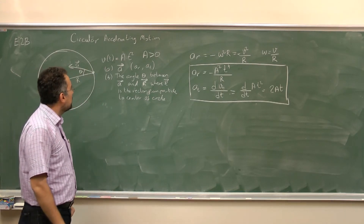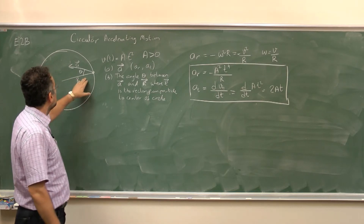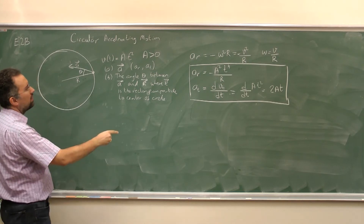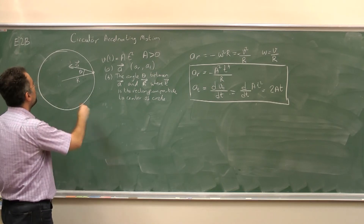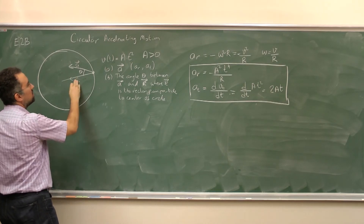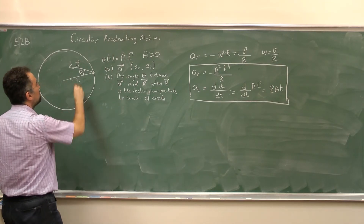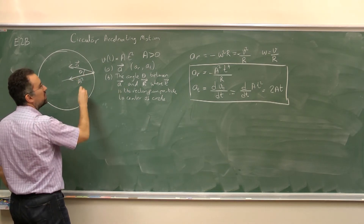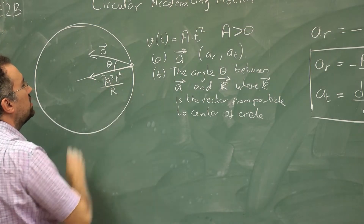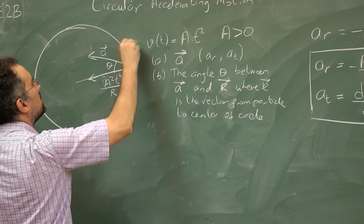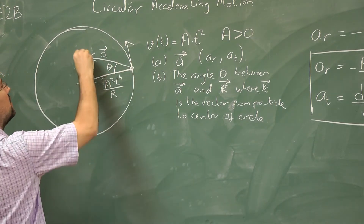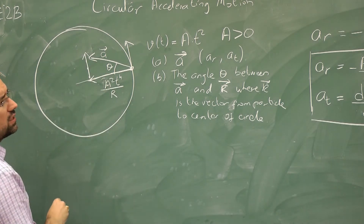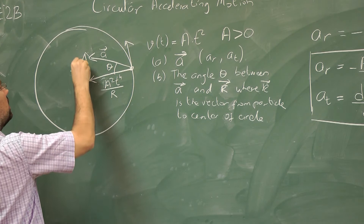For Part B, we want the angle theta. We have the radial component pointing inward — if drawn in the positive direction its magnitude is a squared t to the power 4 over r — and the tangential acceleration has magnitude 2at.